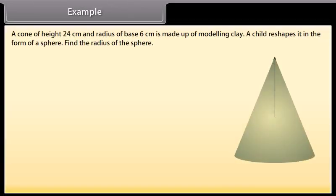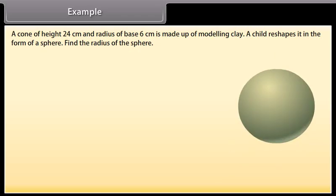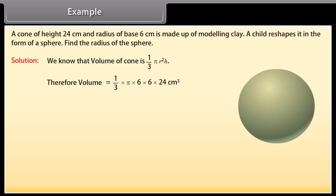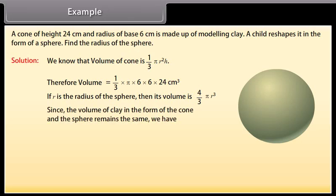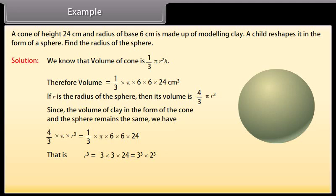A cone of height 24 cm and base radius 6 cm is made of modeling clay. A child reshapes it into a sphere. Find the radius of the sphere. Volume of cone = (1/3)πr²h = (1/3) × π × 6 × 6 × 24 cm³. If r is the radius of the sphere, its volume = (4/3)πr³. Since the volume of clay remains the same, equating the two gives r = 3 × 2 = 6 cm. Therefore the radius of the sphere is 6 cm.